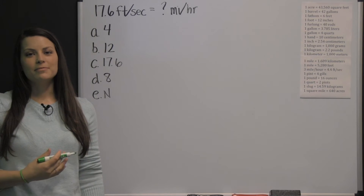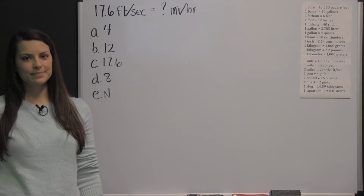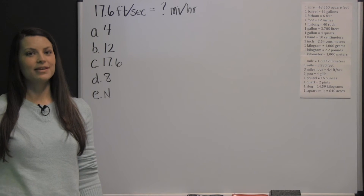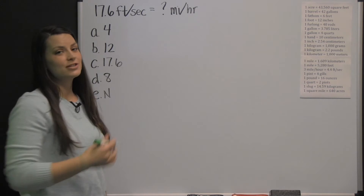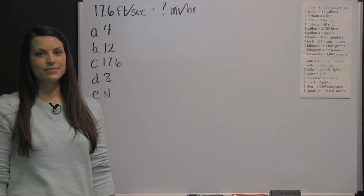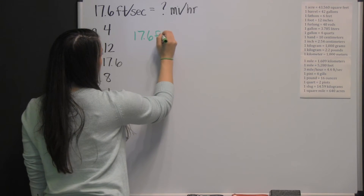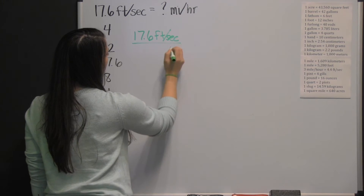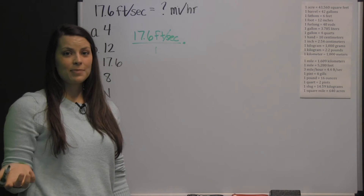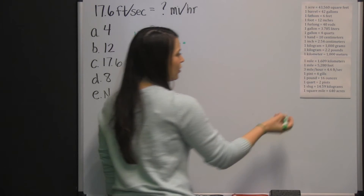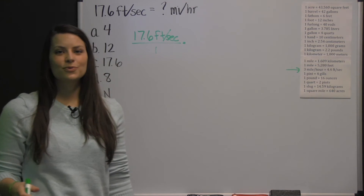This is a problem from the mathematical usage section of a CAST practice exam. On the mathematical usage section of the CAST exam, you're going to be doing conversions, and you'll have a conversion table to use. In this conversion, we start with 17 and 6 tenths feet per second and we want to convert that to miles per hour. We have a conversion for feet per second to miles per hour, so that's the conversion factor we're going to multiply by.